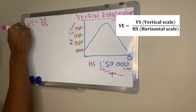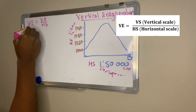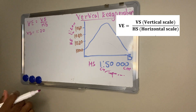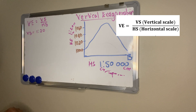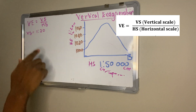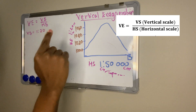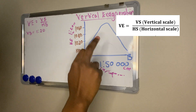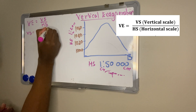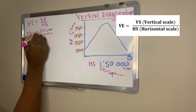Our vertical scale is 1 to 20, but this is in meters. To calculate VE we need to use the same units. The horizontal scale is in centimeters, so we must convert the vertical scale to centimeters by multiplying 20 by 100. That gives us 2,000. Our vertical scale is now 1 to 2,000, in centimeters. We then write it as a fraction: one over two thousand.